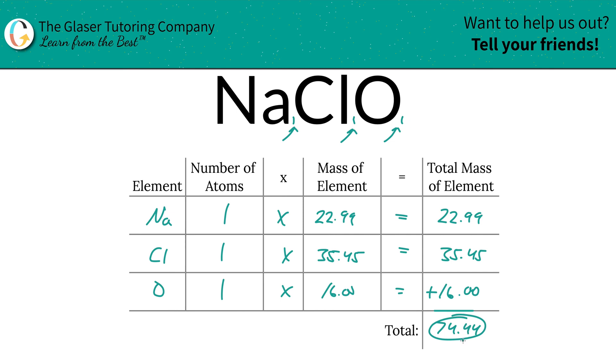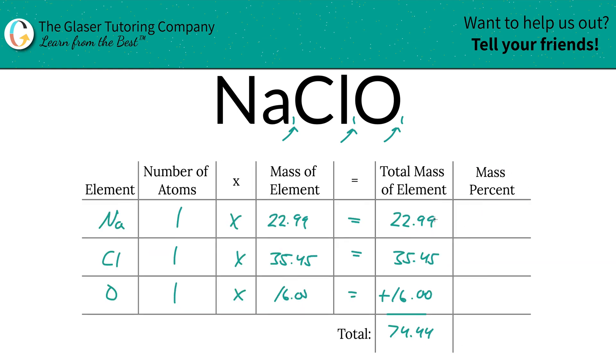Now that I have that total mass in hand, I'm going to add a column to the table to calculate the percentages. To find the mass percent of sodium, we're going to take the total mass of that sodium, 22.99, divided by the total mass of the entire compound, 74.44. That's why we did that first. Then multiply that by 100.